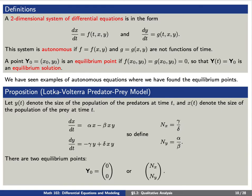We'll say that this system is autonomous if both f and g are not functions of time. A point, capital Y-zero, is said to be an equilibrium point if f evaluated at this point is zero and g evaluated at this point is zero. This is so that capital Y of t, which equals this point as a constant function, is called an equilibrium solution.